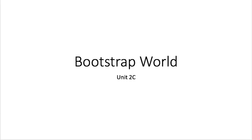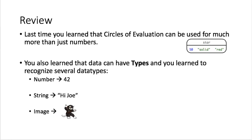Here's the last video for this week. Let's review what we did last meeting. Last time you learned that circles of evaluation aren't just for math statements, but can be used for more than just numbers. We saw how the function star could be used to draw a star, and how circles of evaluation help you write the code. You also learned that data can have types, and we talked about three different types: number, string, and image, which Racket recognizes.